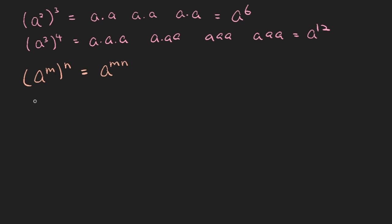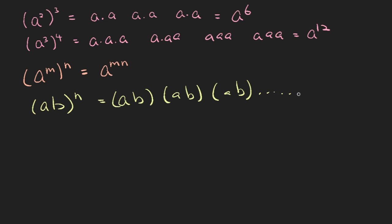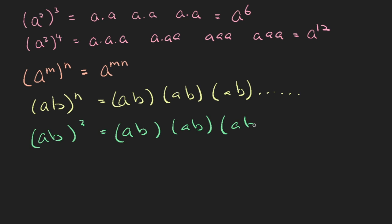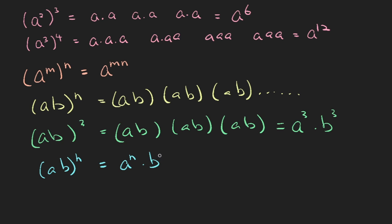Let's look at the next one: (ab) to the power of n. This really means a times b, n times, and so on. So (ab) to the power of n is equal to a to the power of n times b to the power of n.